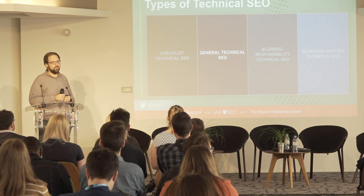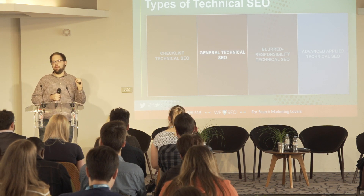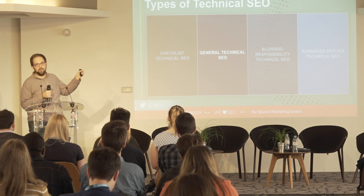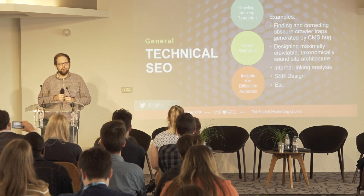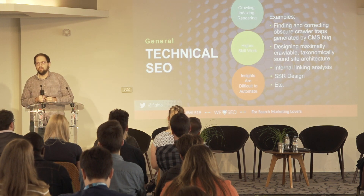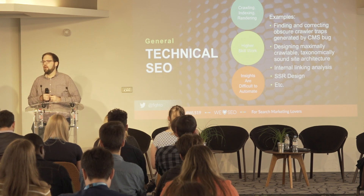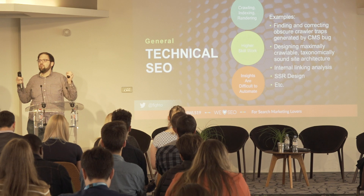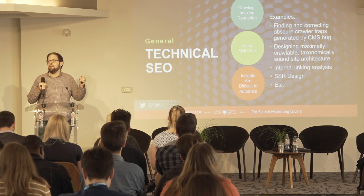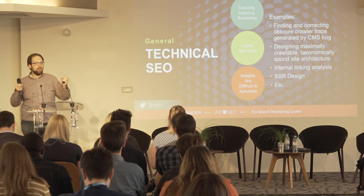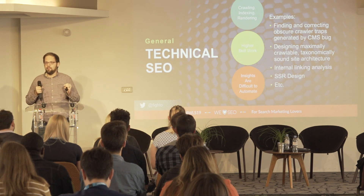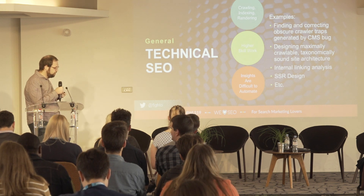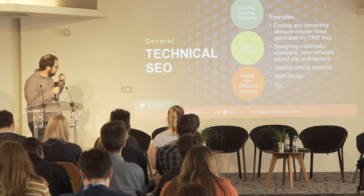The second type is general technical SEO — most in line with the traditional definition. Like checklist technical SEO, it has to do with crawling, indexing, ranking, and rendering, but it's the higher-skilled version. It's less subject to automation and requires more skill sets and knowledge to solve greater and more complex problems — things like finding and correcting obscure crawler traps generated by a bug in your CMS, designing a maximally crawlable taxonomy, sound site architecture, server-side rendering, and internal link analysis.